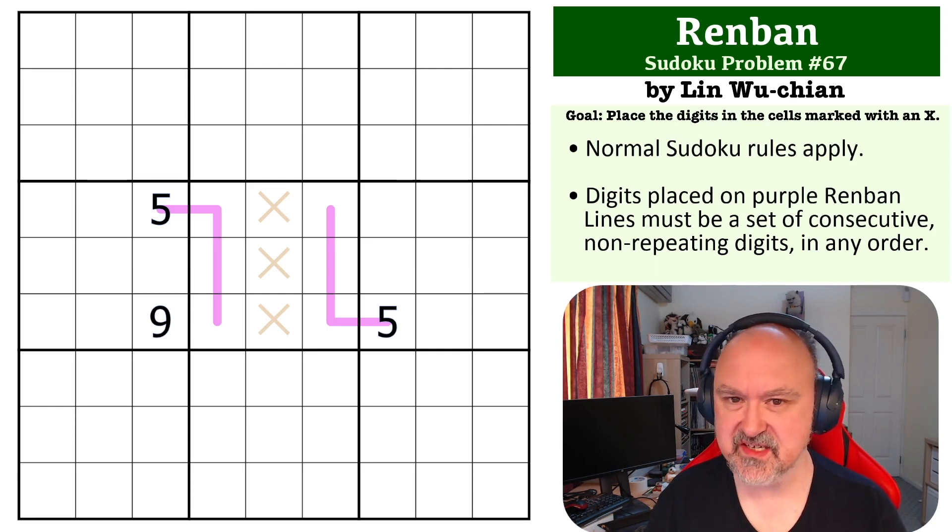...is they must each contain a set of consecutive non-repeating digits in any order. The way I always like to think about it is if you were to take the digits that are on the Renban line off and sort them, they would always form a run of digits. There'll be a link below...